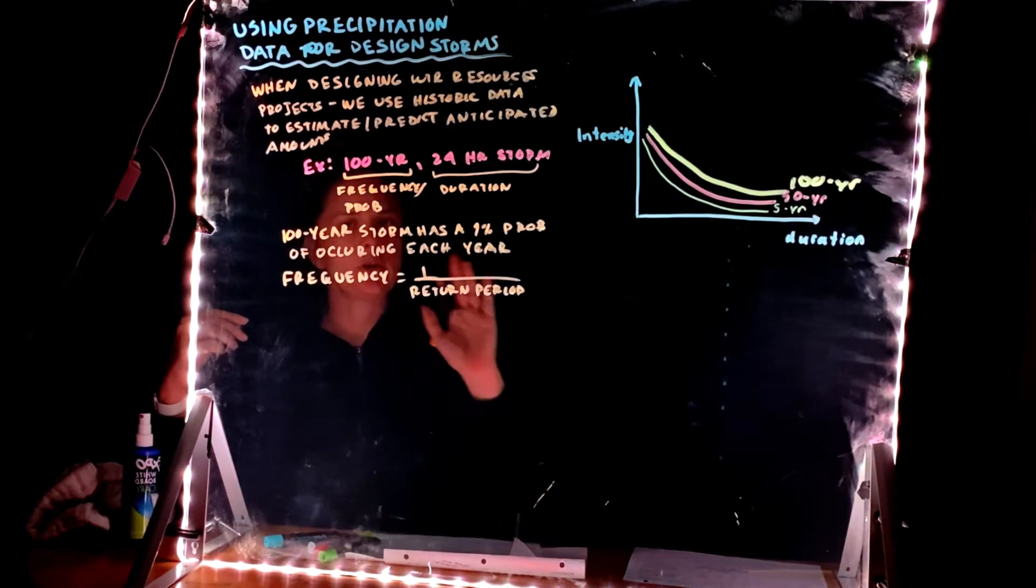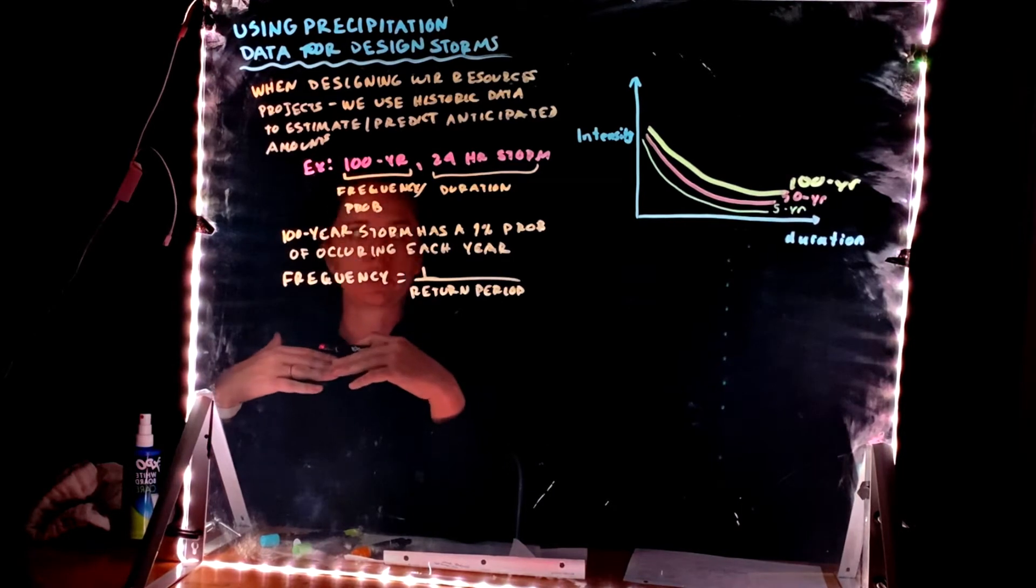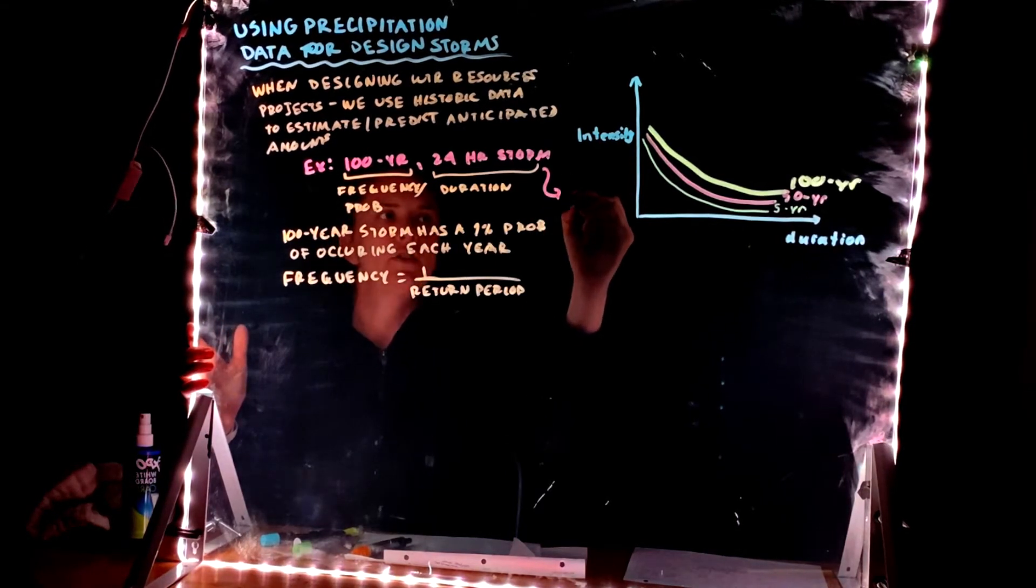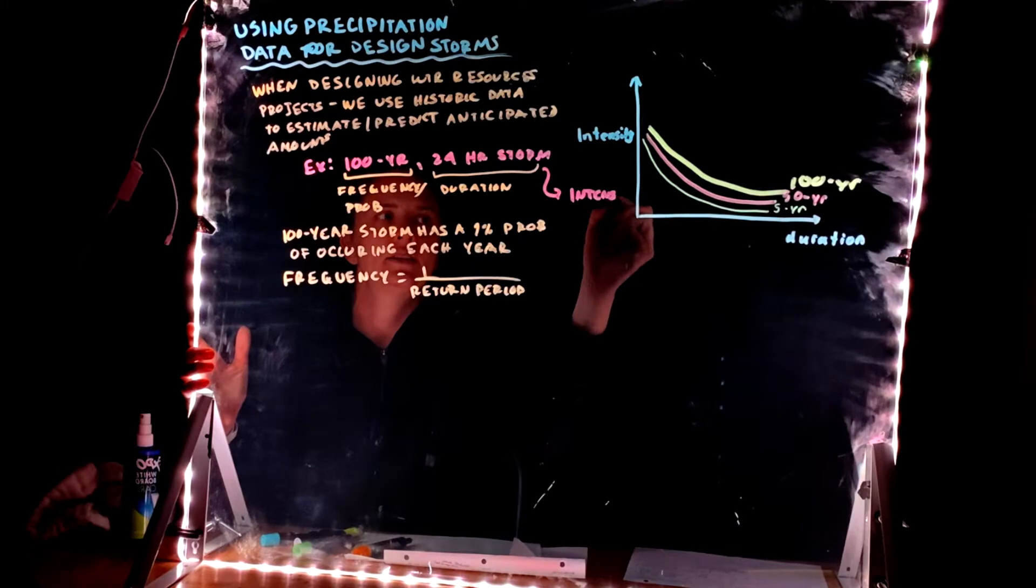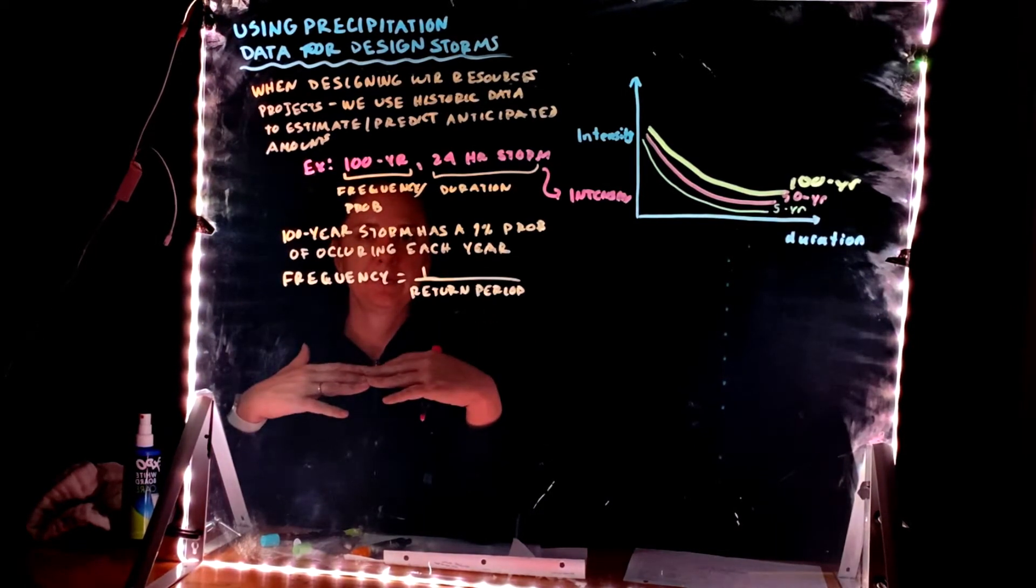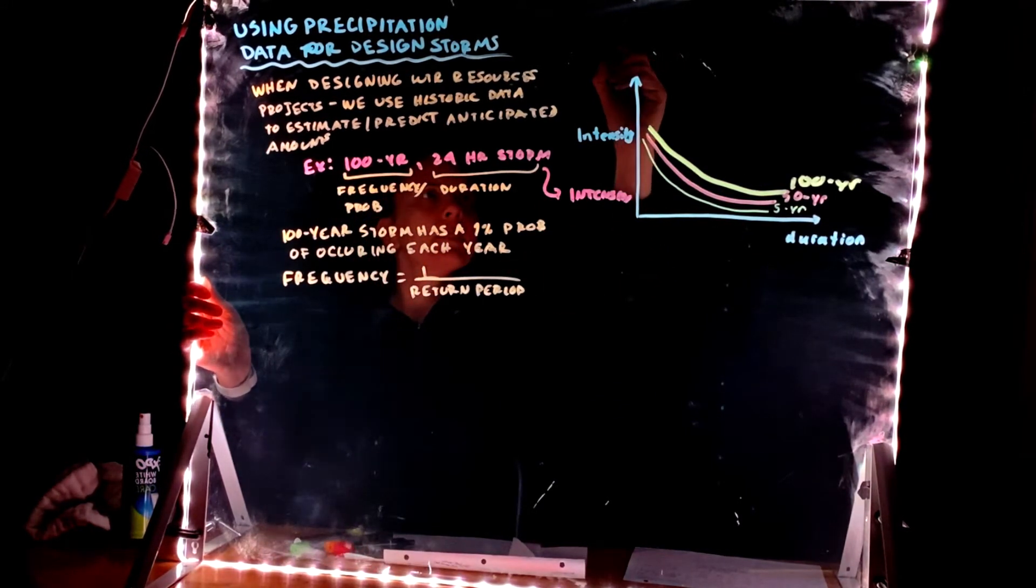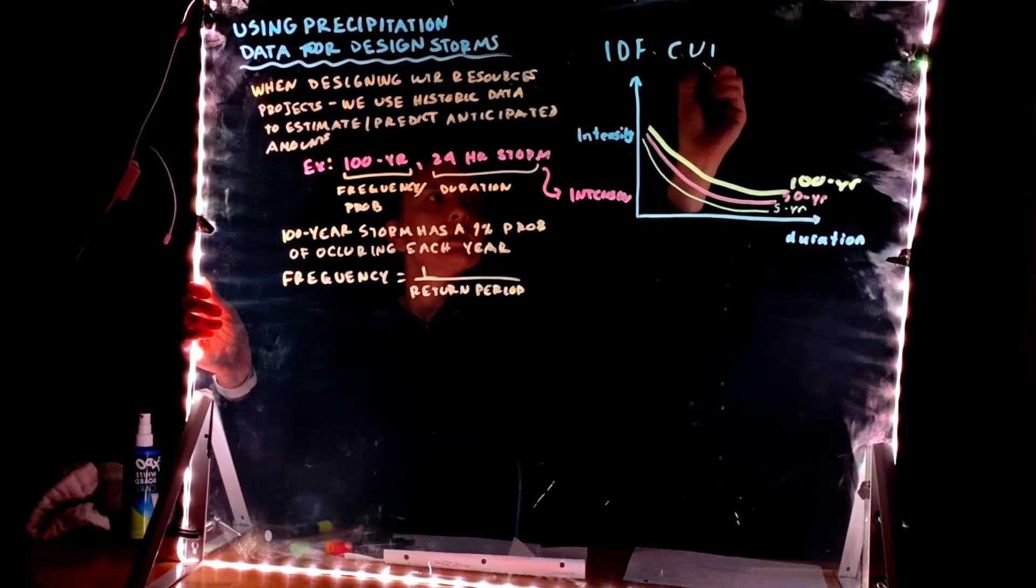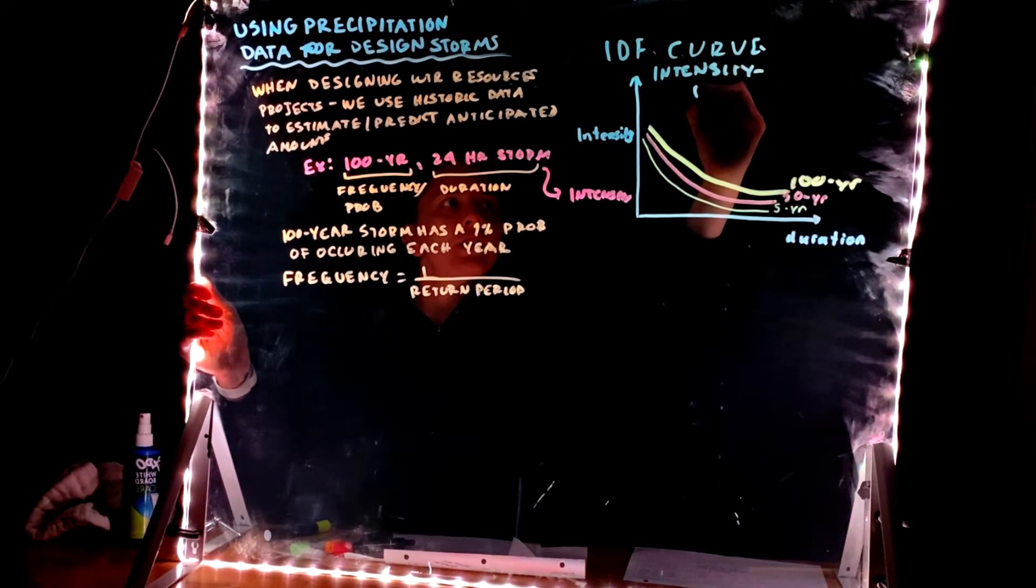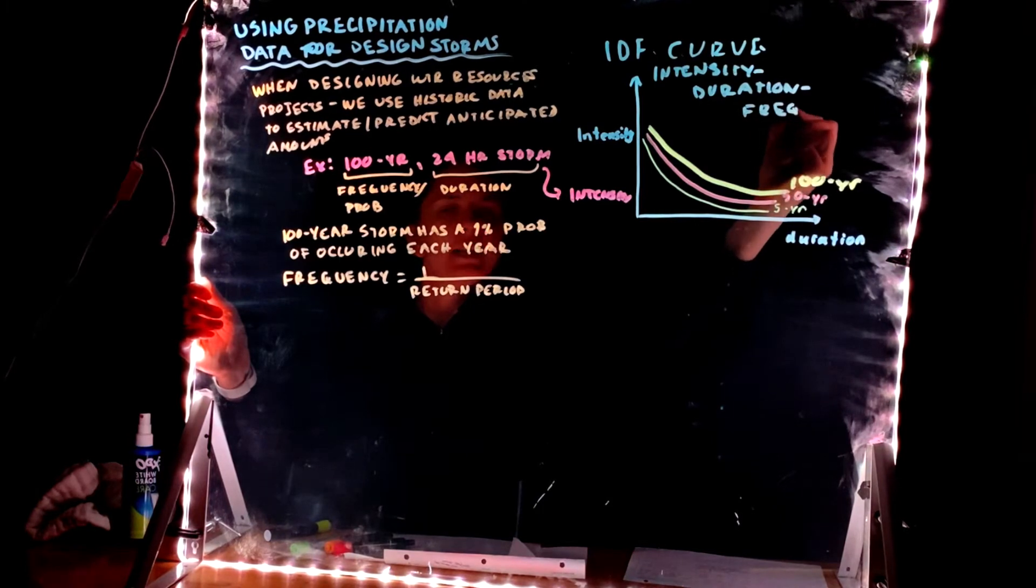So we do this, we get these values, how do we get this value? So I know that for some particular design, I need to use the 100-year, 24-hour storm. That's going to give us some number, some value, and that value is going to be some intensity. So I need some way to find the intensity, given that I need to design for a 100-year, 24-hour storm. How we're going to do that is by using these IDF curves. So this is an IDF curve, which stands for intensity, duration, and frequency.